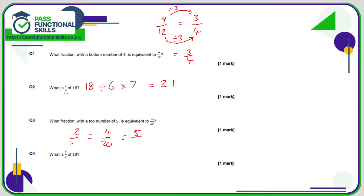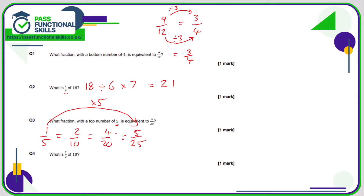Does two over ten help? What do we do to turn a two into a five? Not really helpful, so let's simplify again. Two out of ten — both even — so divide top and bottom by two: that's one fifth. Now it's much easier. What do you do to turn a one into a five? Multiply by five. So we multiply the bottom by five as well: five times five is 25. Therefore four out of twenty is the same as five out of twenty-five.